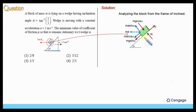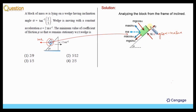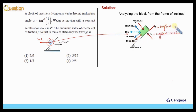Now we can write the normal reaction. The magnitude of the normal reaction should be equal to mg cos alpha minus ma sin alpha. Since the block is not sliding, the upward force will be balanced by the downward force. So we can write f equal to mg sin alpha plus ma cos alpha.